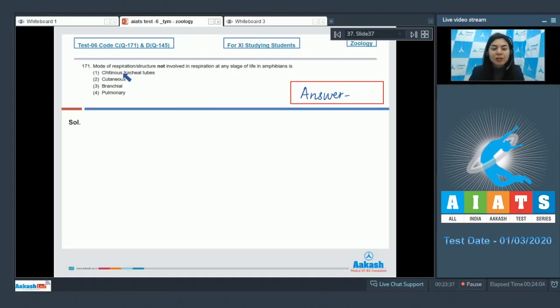Question 171: Mode of respiration or structure not involved in respiration at any stage of life in amphibians is chitinous tracheal tubes, cutaneous, branchial, or pulmonary? The respiration in amphibians is different and by different means as it goes through its developmental stages.